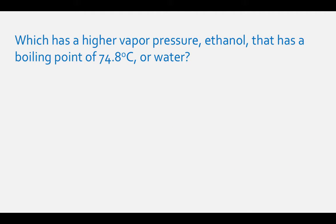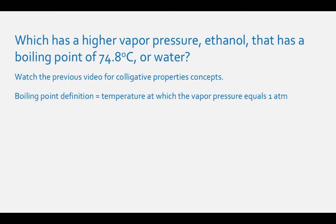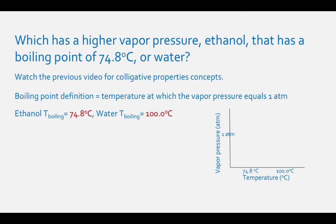Which has a higher vapor pressure: ethanol, which has a boiling point of 74.8 degrees Celsius, or water? This is a question we pondered in the previous colligative properties concepts video. The definition of boiling point is the temperature at which vapor pressure equals 1 atmosphere. Ethanol's boiling point is 74.8 degrees Celsius and water's boiling point is 100.0 degrees Celsius. If we draw a graph of vapor pressure versus temperature and plot both ethanol's boiling temperature versus 1 atmosphere, you will see that ethanol has a higher vapor pressure.